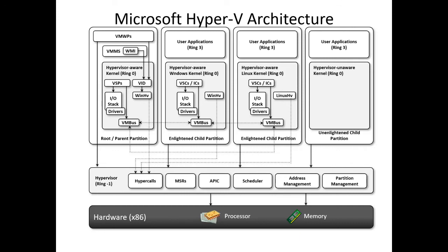The diagram provides a high-level overview of the architecture of the Microsoft Hyper-V environment, which has multiple partitions — a root partition and child partitions — and different components like hypercalls. This concludes the brief explanation of Microsoft Hyper-V and its different partitions. Thank you.